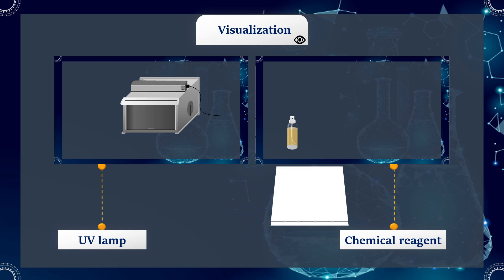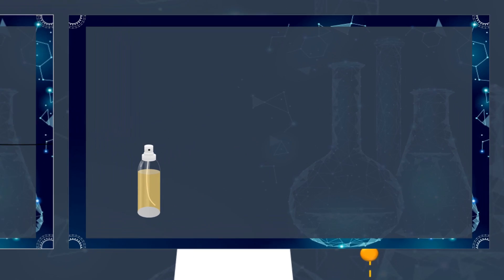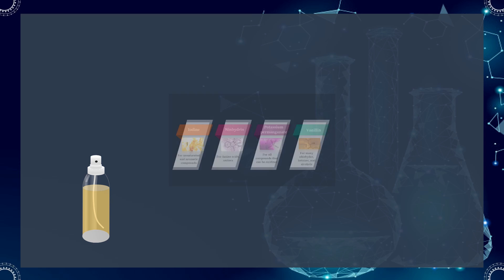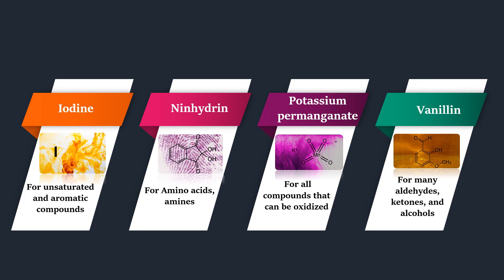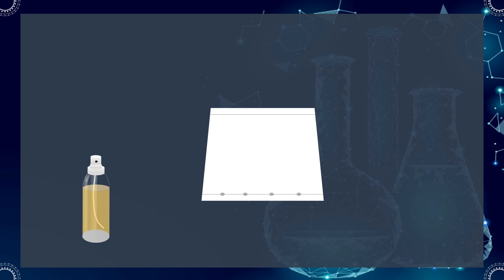For chemical visualization of stains, various visualizing agents react with the spots to produce visible results, such as iodine, ninhydrin, potassium permanganate, and vanillin. The plate can be immersed in these chemicals, or sprayed.